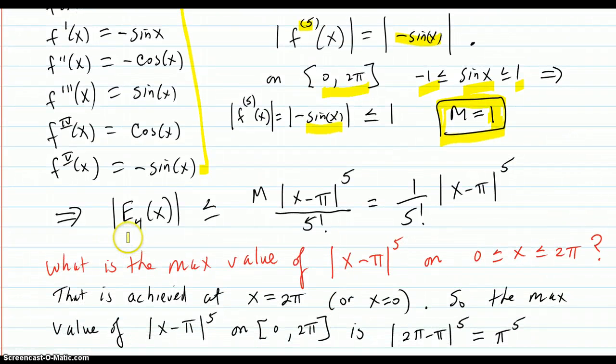Our error bound formula says this: the n plus 1 factorial is 5 factorial, the M is your 1, and you get the 5 up there.